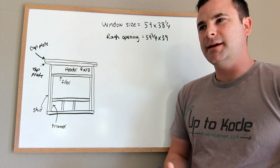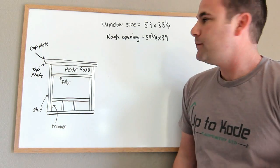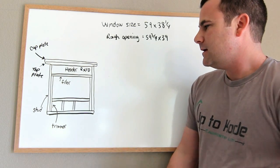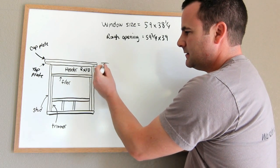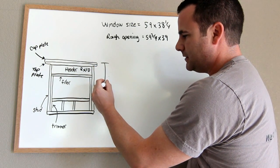Windows are typically more complicated than a door because you have your rough sill in there. Now what this is for is a typical full height wall we'll call 8 foot 1 inch.